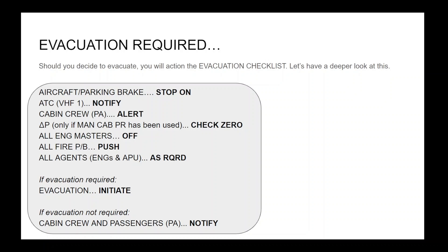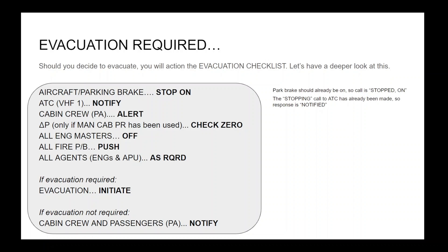Aircraft parking brake — stop — on. The parking brake should already be on, so the call is 'stopped, on.' ATC VHF1 — notify. The 'stopping' call to ATC has already been made, so the response is 'notified.' Cabin crew — PA — alert. The 'attention crew at stations' PA has already been made, so the response is 'alerted.' Differential pressure, or delta P — only if manual cabin pressure has been used — check zero. This is not applicable in this scenario.